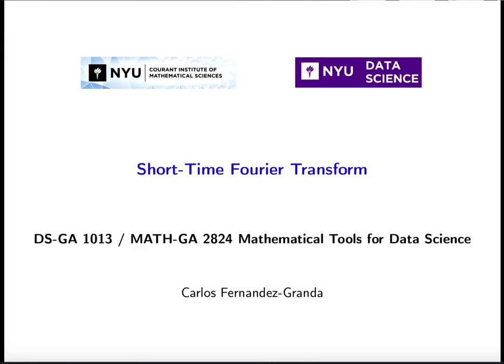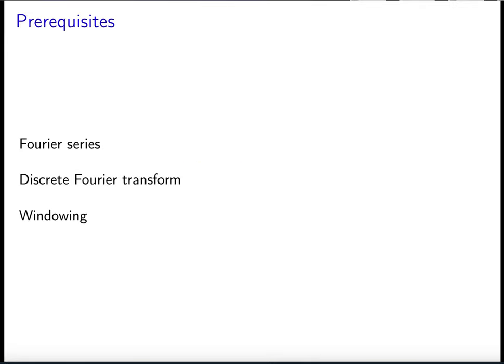Today we're going to talk about the short-time Fourier transform. The prerequisites are the Fourier series, the discrete Fourier transform, and especially windowing, because essentially we're going to apply the ideas introduced when talking about windowing to perform a time-frequency analysis — a transform that overcomes some of the shortcomings of the Fourier series when we also want to obtain time information.